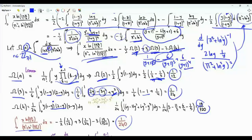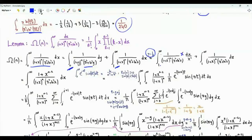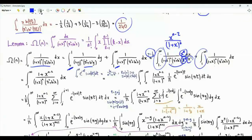We have obtained the value of the integral of interest, but now we need to establish the result that omega(n) can be written in that form. The first step is to split the integral from 0 to infinity into an integral from 0 to 1 and another from 1 to infinity. For the integral from 0 to 1, we do the change of variables y equal to 1/x, so the limits become from 1 to infinity. We replace y by x^{-1} and multiply numerator and denominator by x^n, giving 1 plus x^n in the denominator and x^{n-2} in the numerator. Combining the two integrals by summing the integrands gives (1 plus x^{n-2}) over (1 plus x^n) times (pi squared plus ln(x) squared)^{-1}.